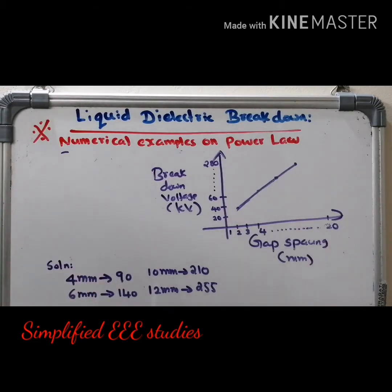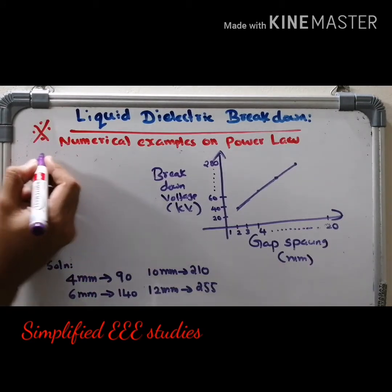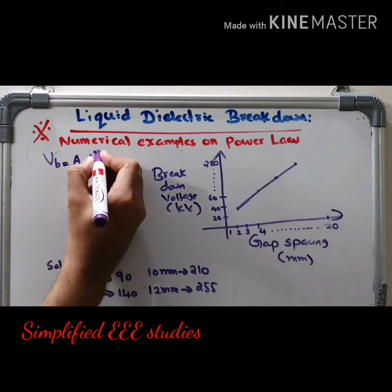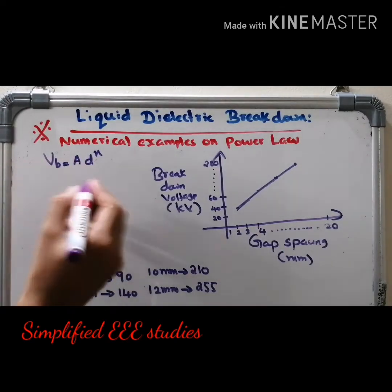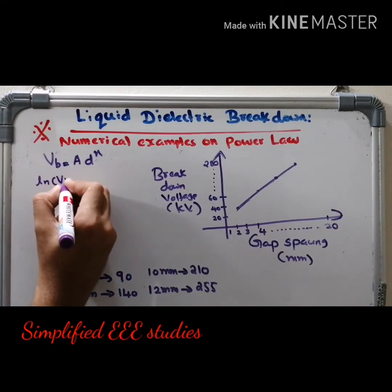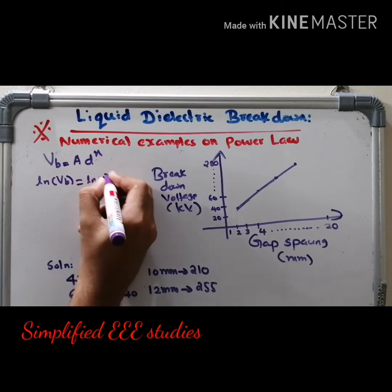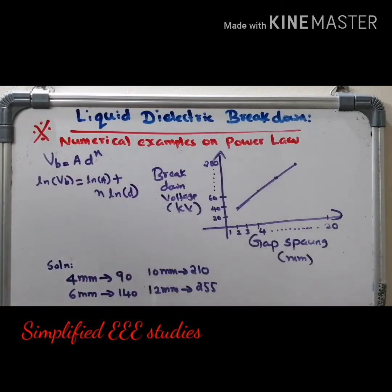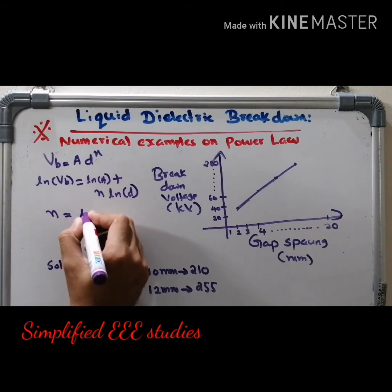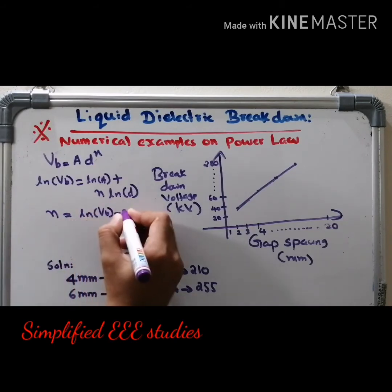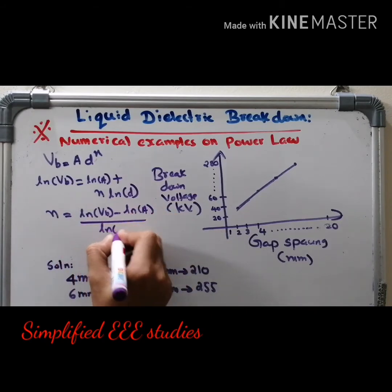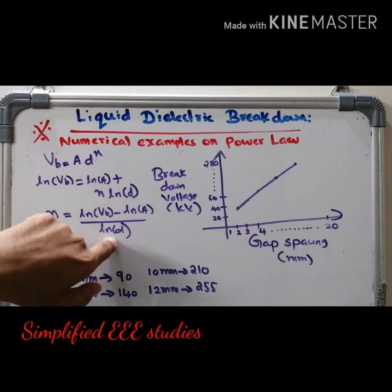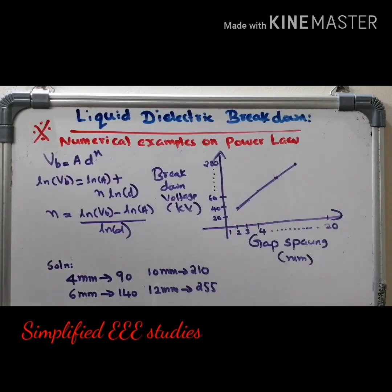Now, what is power law actually? Power law is: VB = A · D^N. Take the logarithm on both sides — ln(VB) = ln(A) + N · ln(D). From this, N = [ln(VB) − ln(A)] / ln(D). So N is actually the slope of the graph — delta Y by delta X.